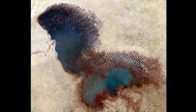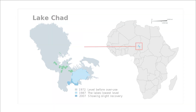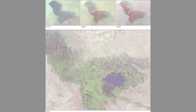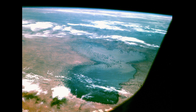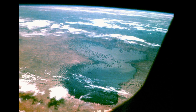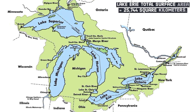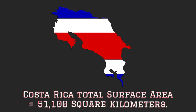Once one of the largest lakes in Africa, Lake Chad's area is shrinking rapidly in recent decades. In the mid-20th century, the lake covered a total surface area of approximately 26,000 square kilometers, roughly the size of Lake Erie, or half the size of Costa Rica.